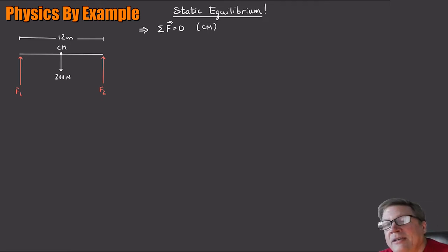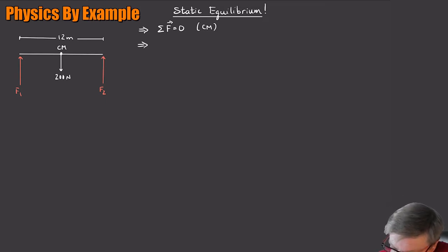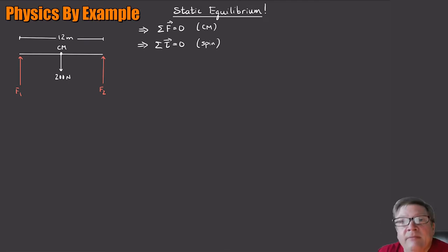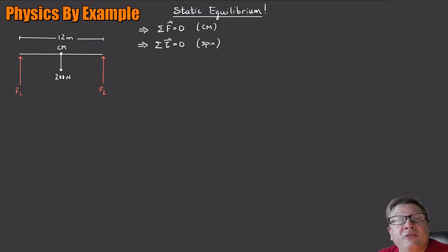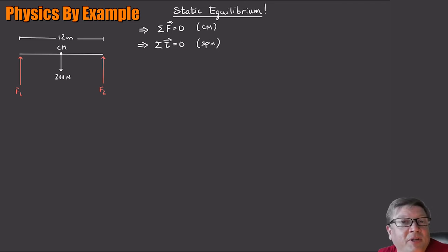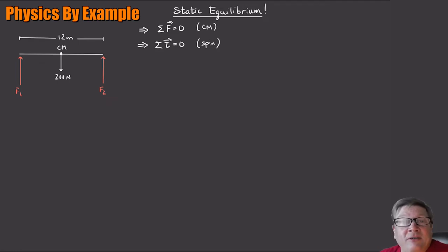So we need another condition. The other condition for static equilibrium is not only that the center of mass is not accelerating, but it also has to be true that the sum of all the torques around any point is going to be zero — meaning no spin. So static equilibrium always implies those two things: the sum of forces equals zero, and the sum of torques equals zero. This is what you want if you're building a bridge — you don't want it to accelerate nor to spin.